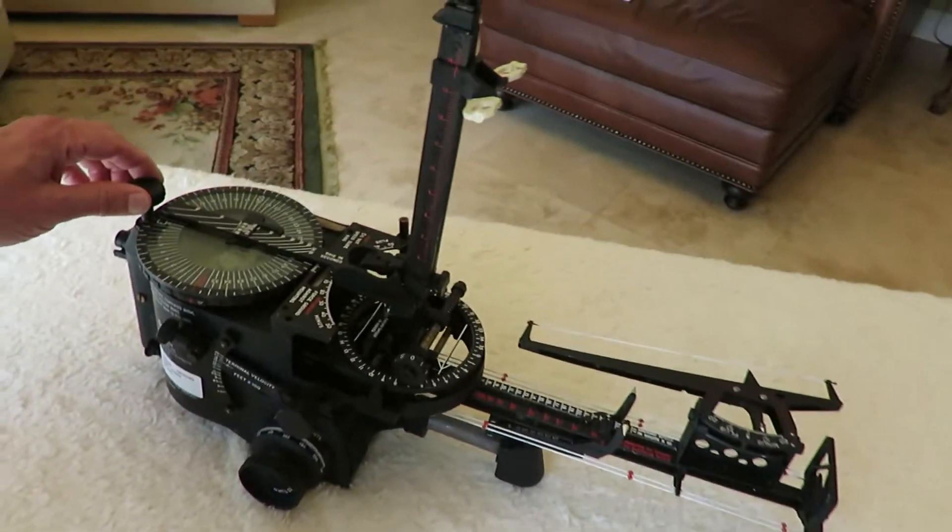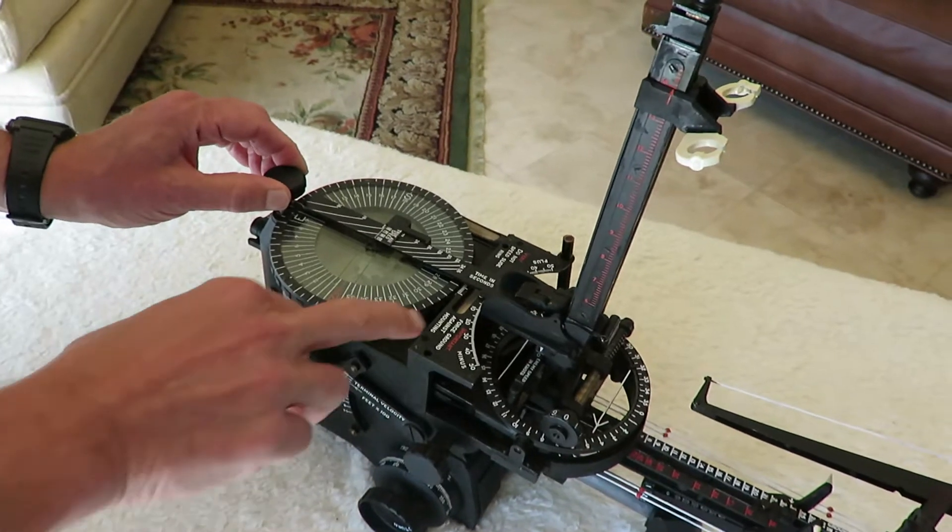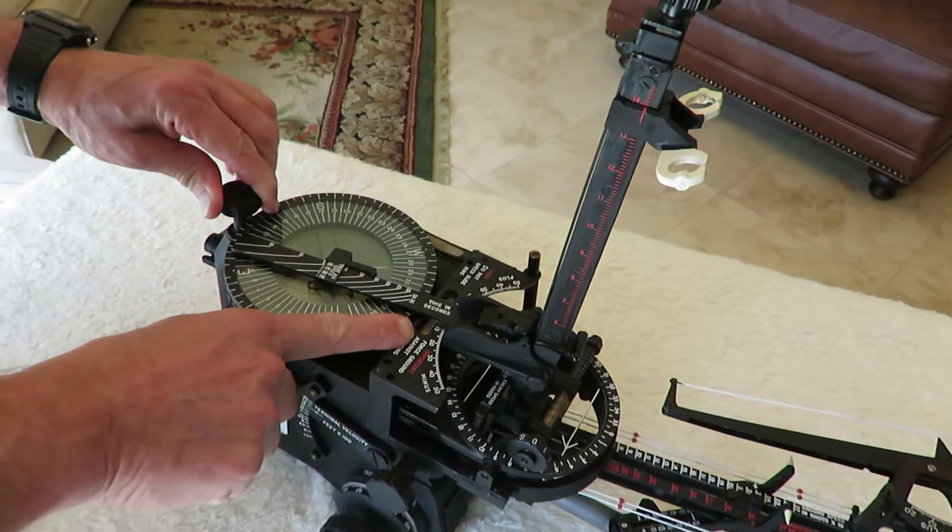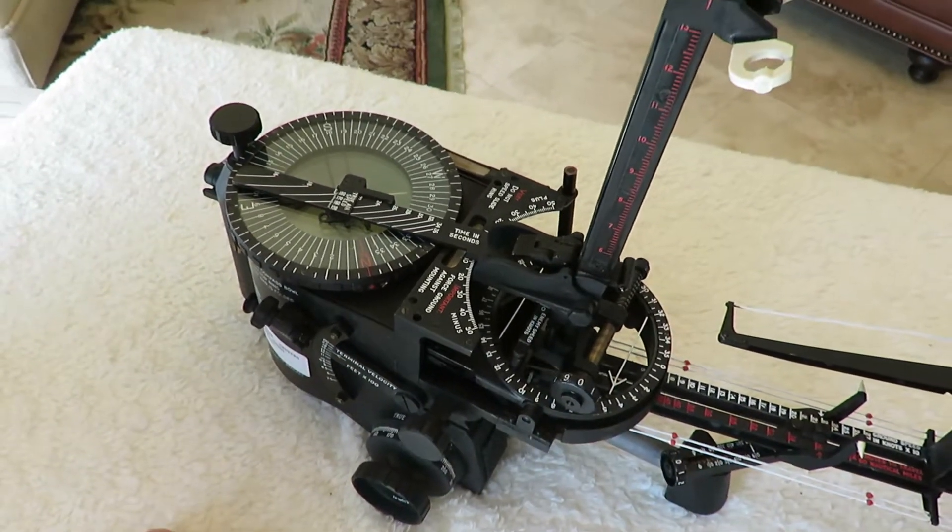We then are going to use the compass clutch milled head to set that same drift angle on the bomb site, which is minus 10 degrees here.